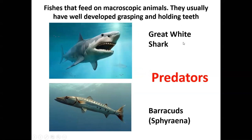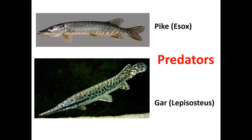Predators are fishes that feed on macroscopic organisms — big-size aquatic animals like fishes and mollusks. Because they feed on large prey, they usually have very well-developed teeth which help in grasping and holding prey. Examples include sharks and barracudas, which are very good examples of predators. Pike and gars are also predators — carnivorous fishes that feed on big-size aquatic animals.